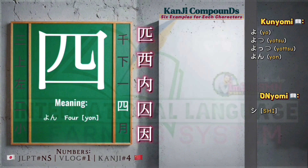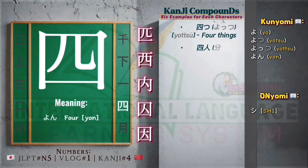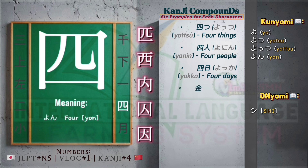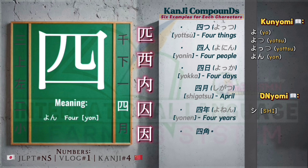Compound of the kanji character. In this part, we are going to learn how to use kunyomi and onyomi readings. Yo, yotsu — four things. Yonin — four people. Yokka — four days. Shigatsu — April. Yonen — four years. Shikaku — square.